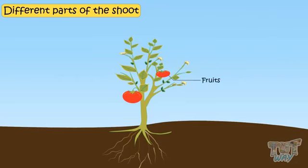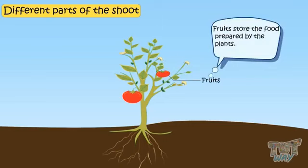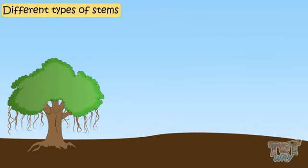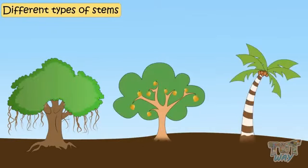Fruits store the food prepared by the plants and also enclose seeds within them. Different types of plants have different types of stems.